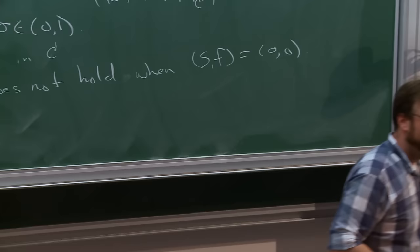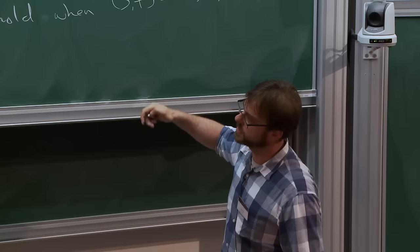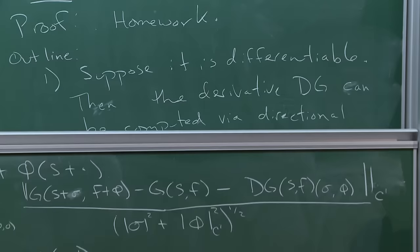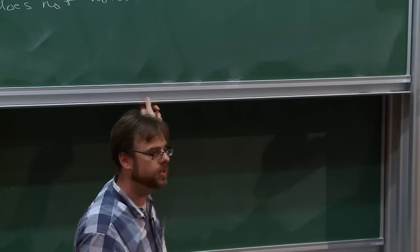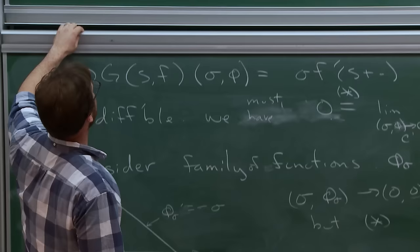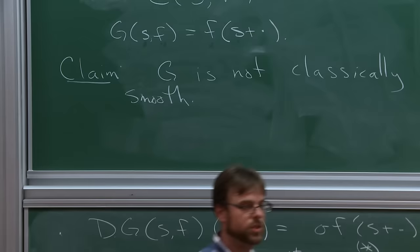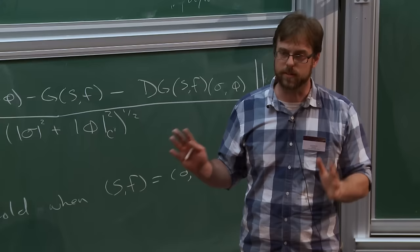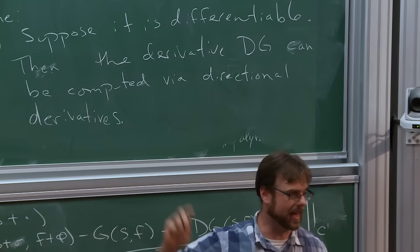This is under the assumption that the starred equation does not hold when (S,F) equals (0,0). That's not too difficult to check. If you get bored with the rest of the talk, you can go ahead and try to work out this example. And then the point is that to finish the claim — that G is nowhere differentiable — is just a matter of shifting this point around more generally. The conclusion is that this reparameterization action, in this toy case, is not classically differentiable, period. So if you have a reparameterization group acting on your space of functions, in general that will not be smooth in a classical sense. Something has to be done about that.